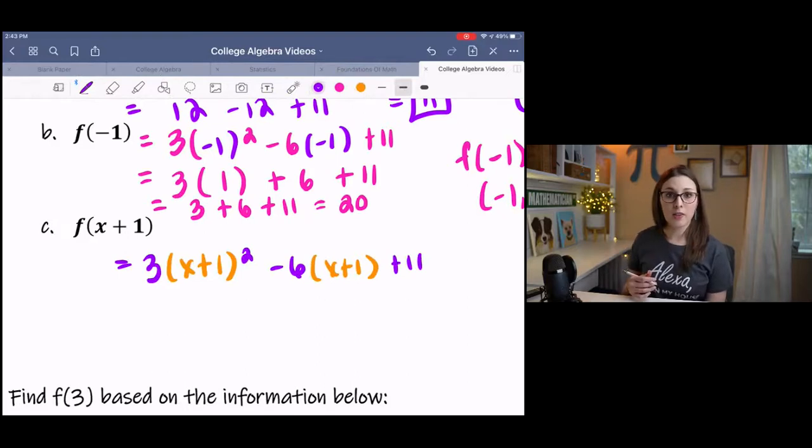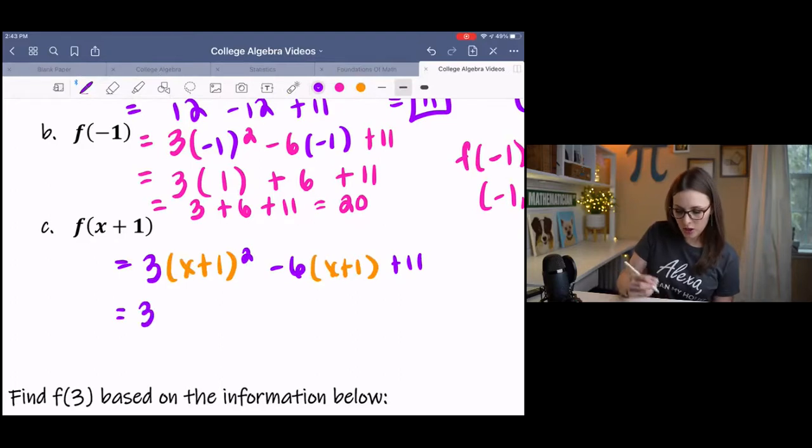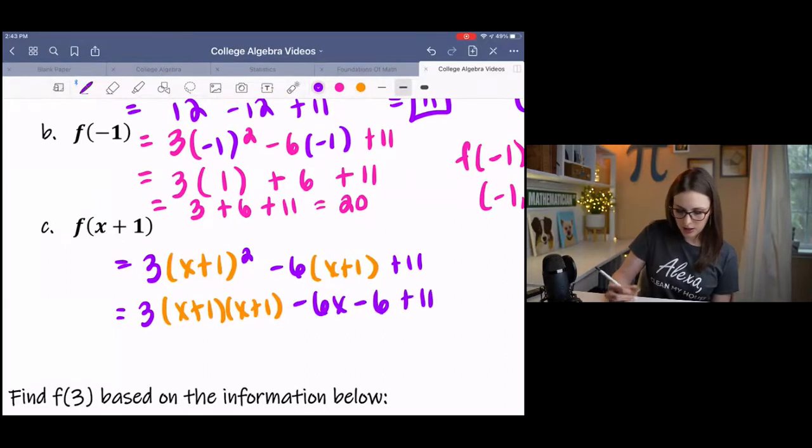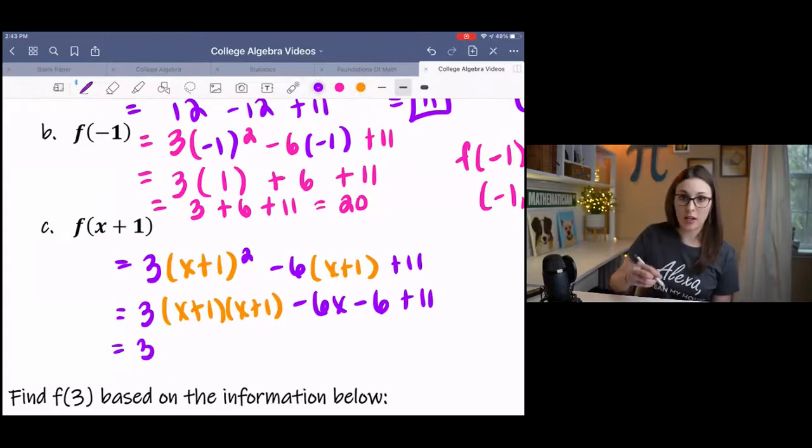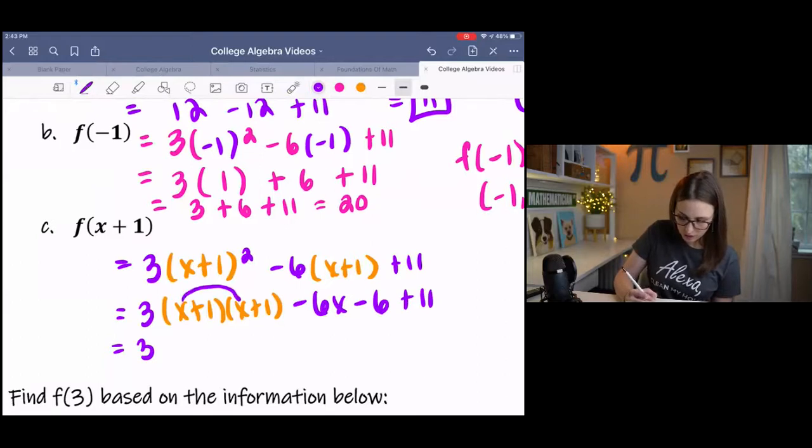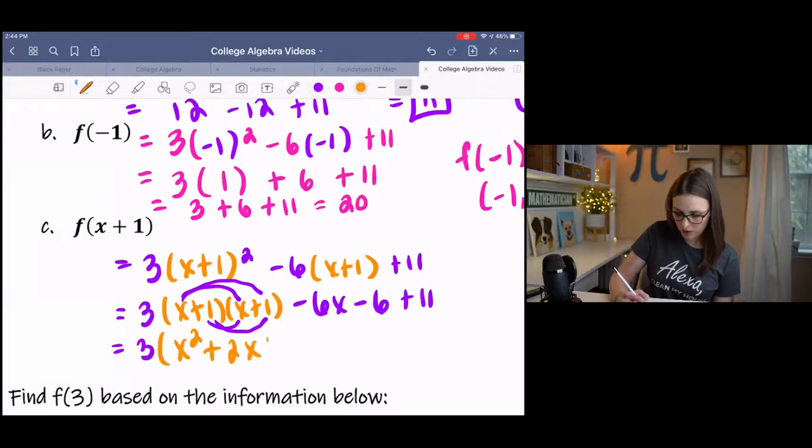Everywhere that there is an x, we will substitute it. Then we need to simplify. This is going to kind of go over simplifying polynomials a little bit. By definition of an exponent, x plus 1 squared means x plus 1 times itself. Then I'm going to distribute this 6. Then I'm going to multiply the two binomials using the distributive method. We get x squared plus 1x plus 1x is plus 2x plus 1.